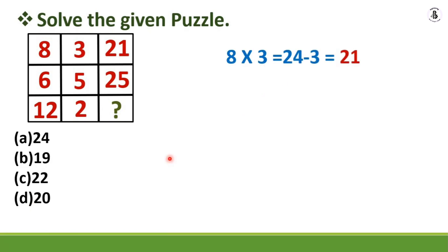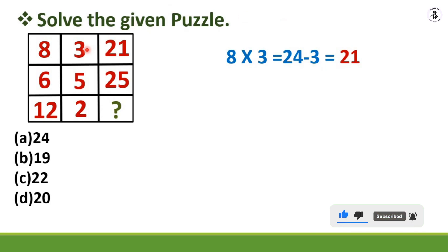To solve the rectangle puzzle, multiply the first digit of the first row by the second digit: 8 multiplied by 3 equals 24. Then subtract the second digit from that product: 24 minus 3 equals 21, which matches the third value in the first row. So the pattern is: (first × second) minus second equals third.